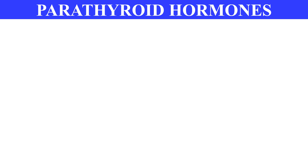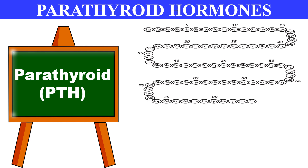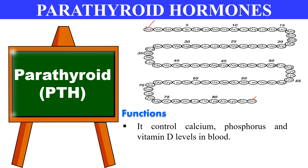Parathyroid hormone (PTH) is secreted by the parathyroid gland. It is a linear polypeptide of 84 amino acids, with its main activity retained in the first 34 amino acids. The structure starts with serine and ends with glutamine. Its function is to control calcium, phosphorus, and vitamin D levels in the blood.